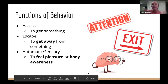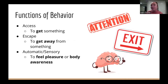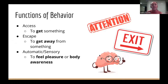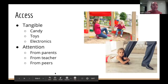Now that we've established what behavior is, there are a few different reasons why we might engage in different behaviors. We have three main reasons. One is access — we want to get something. Another is escape — we want to get away from something. And the last is automatic or sensory-motivated behavior, which means we're doing it to satisfy some sort of sensory need in our body.